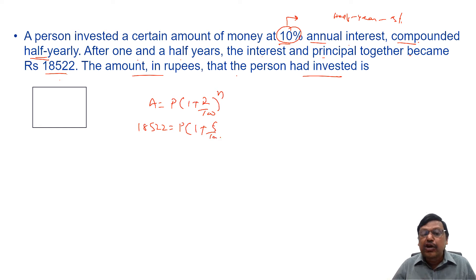So 5 by 100, and we need for one and a half years, means how many times we will compound it? 3 times, so it will be whole power 3.